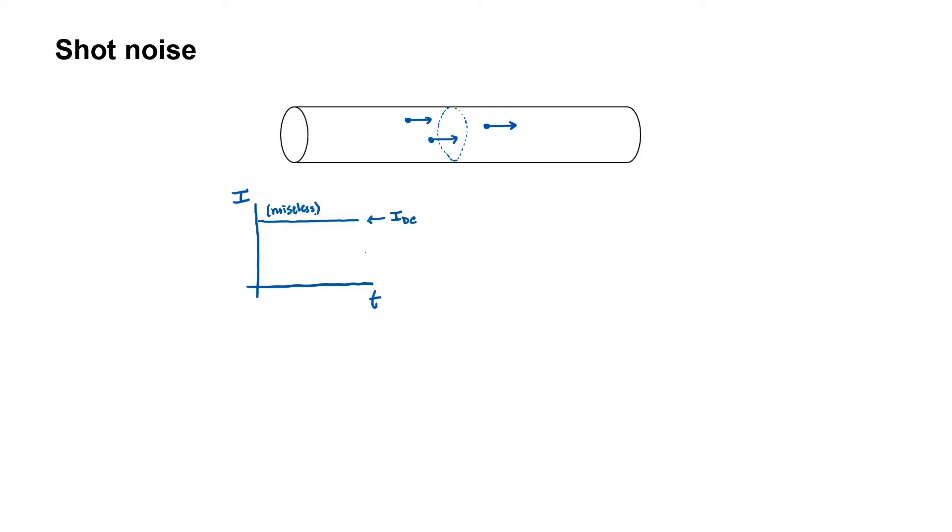How would this change in the case of noise? In the case of a noisy signal, we expect fluctuations. In other words, we expect an AC signal superimposed upon our DC signal. That was true in the case of Johnson or thermal noise, and it's also true here in the case of shot noise with an important exception.